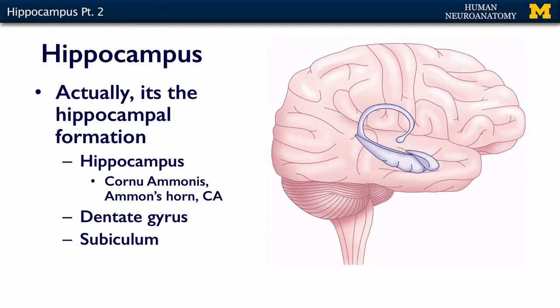When we talk about the hippocampus, we're really talking about the hippocampal formation. The hippocampal formation has three subdivisions: the hippocampus proper, the dentate gyrus, and the subiculum. The dentate gyrus is pictured here — it's this toothy part, hence the name dentate. These three parts together form the hippocampal formation.